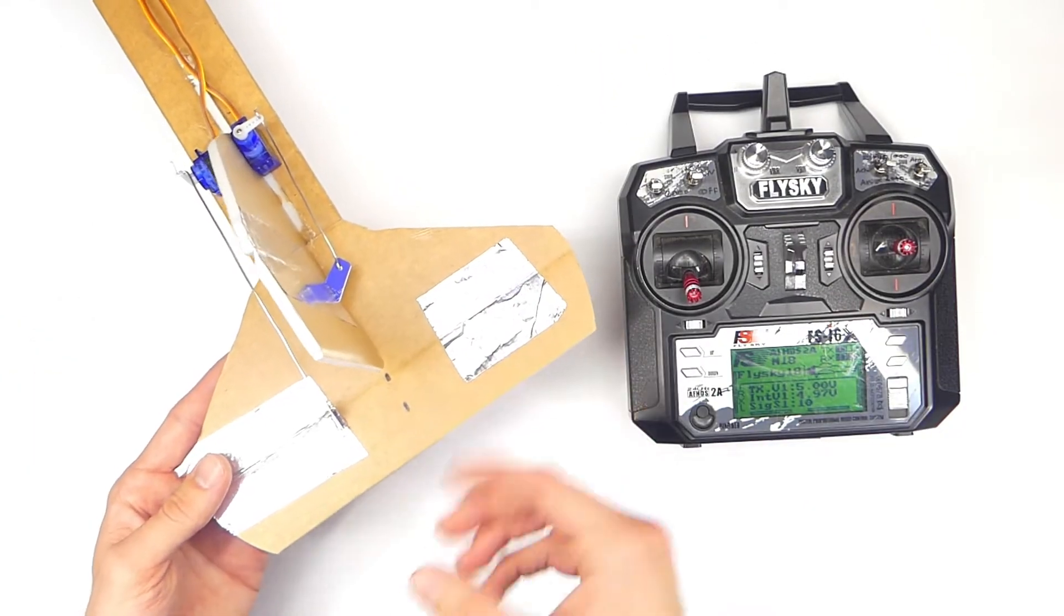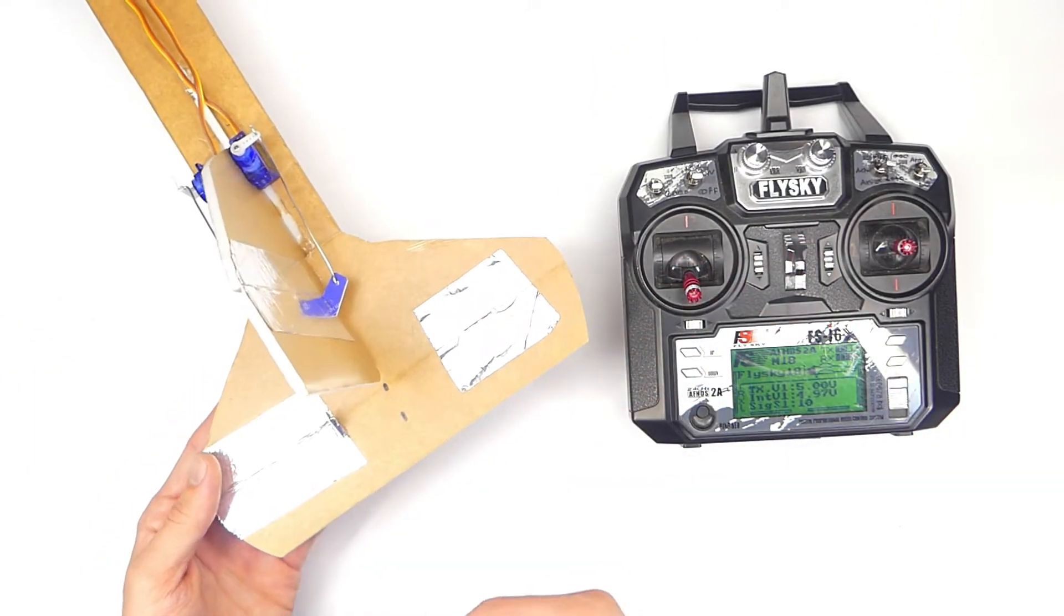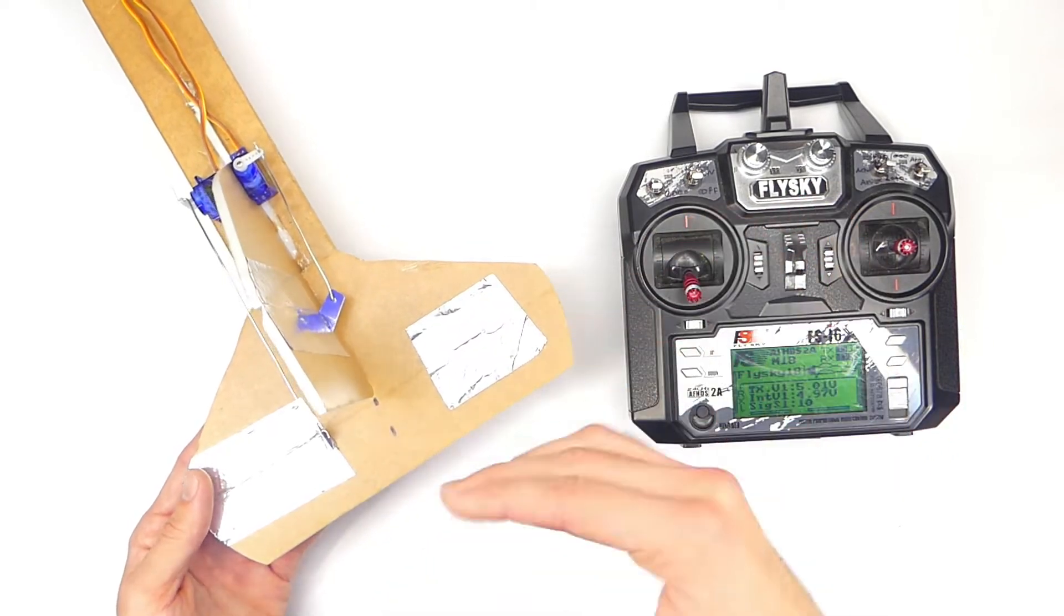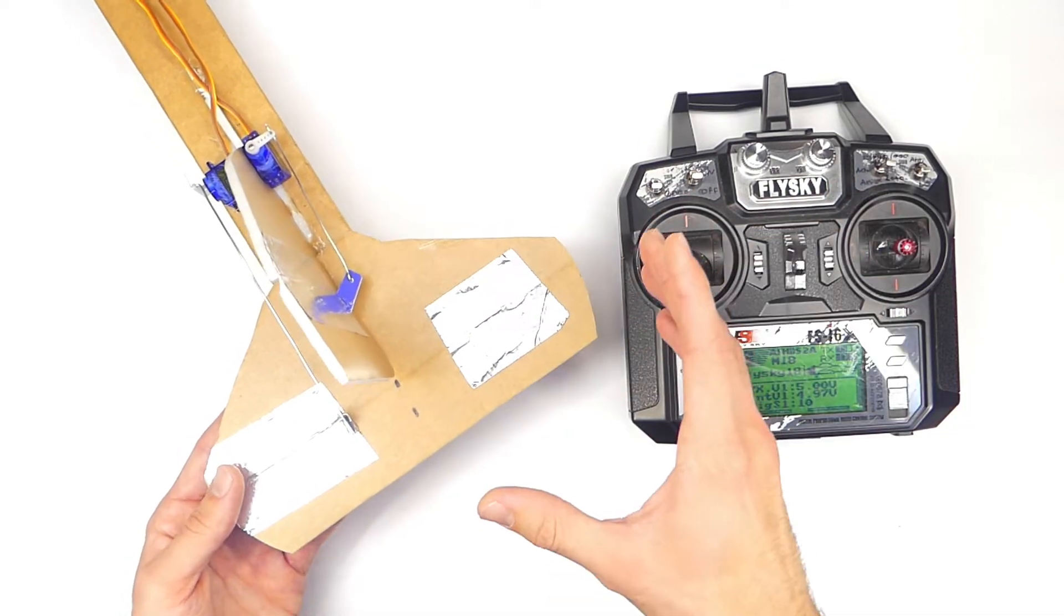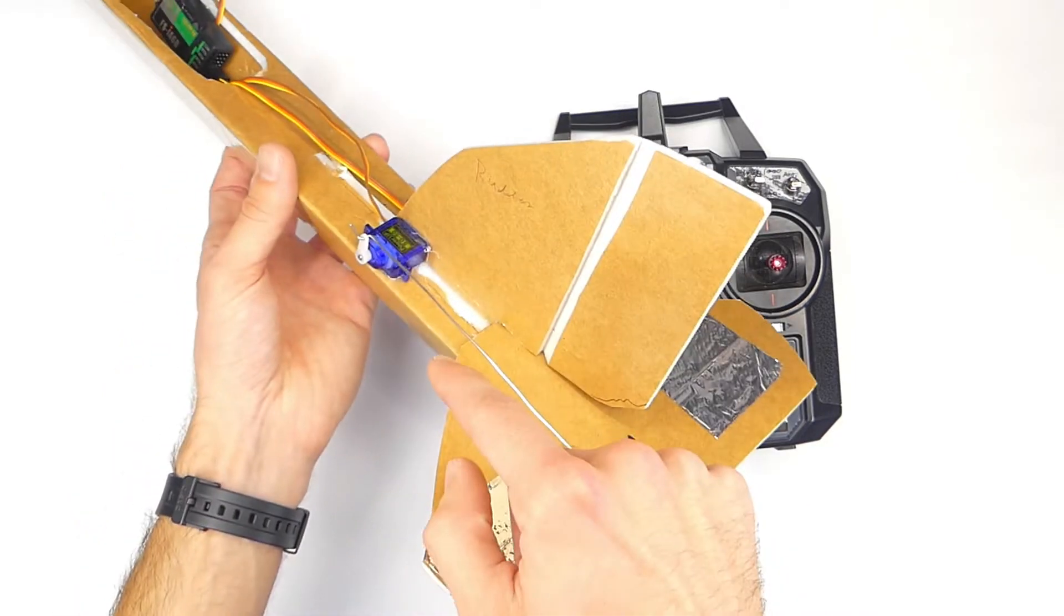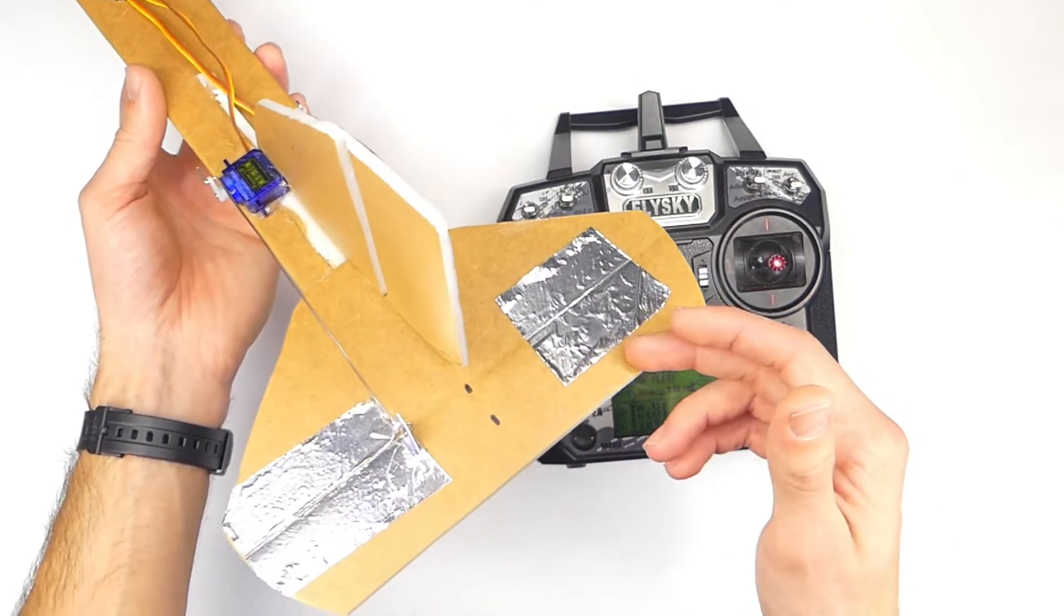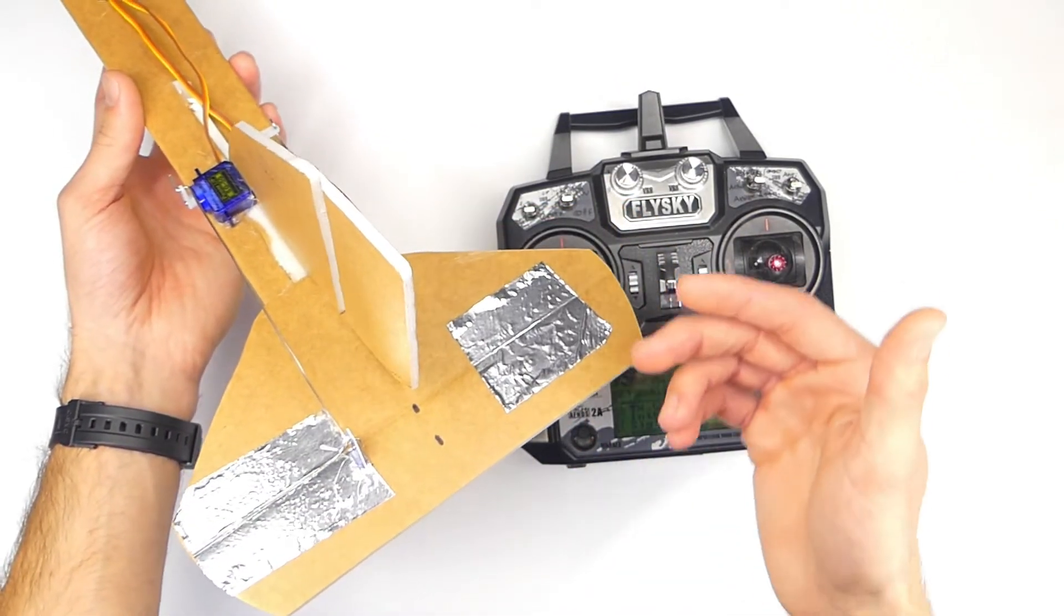In this case, we're looking at an airplane, but this would also work for a quadcopter, although usually if you need to reverse something on a quadcopter, you're going to use Betaflight. So you might end up with a situation where your servo that controls the control surface, in this case the elevator, is backwards.